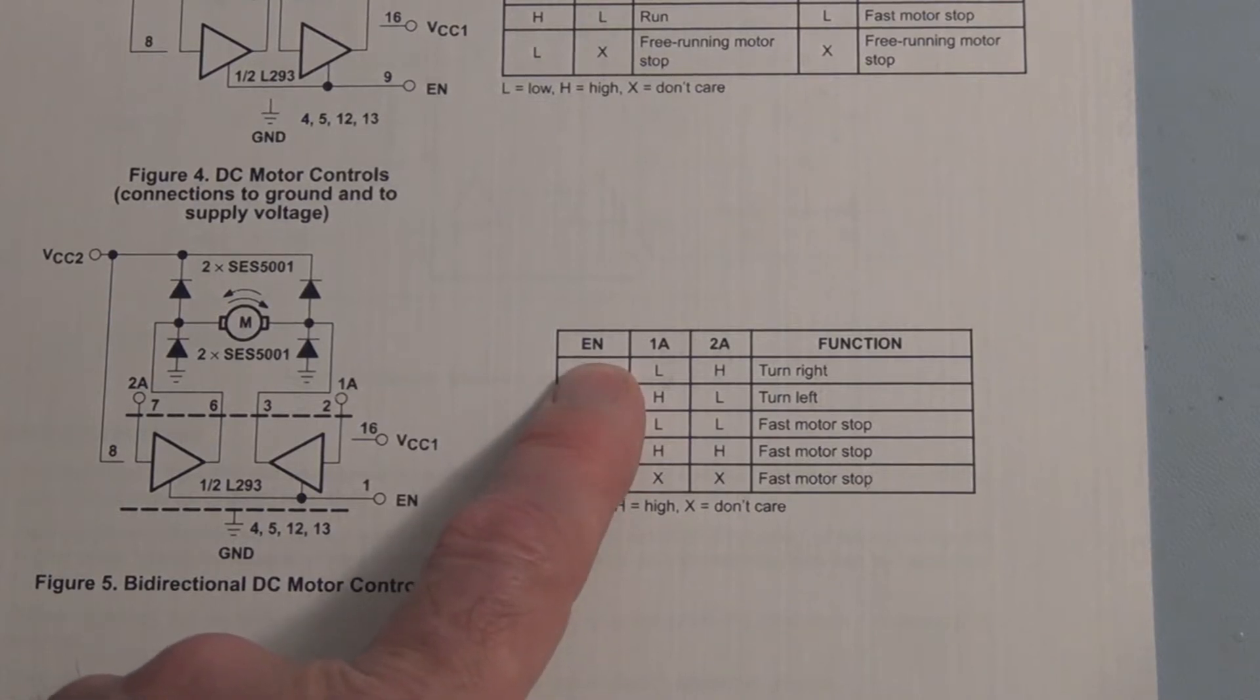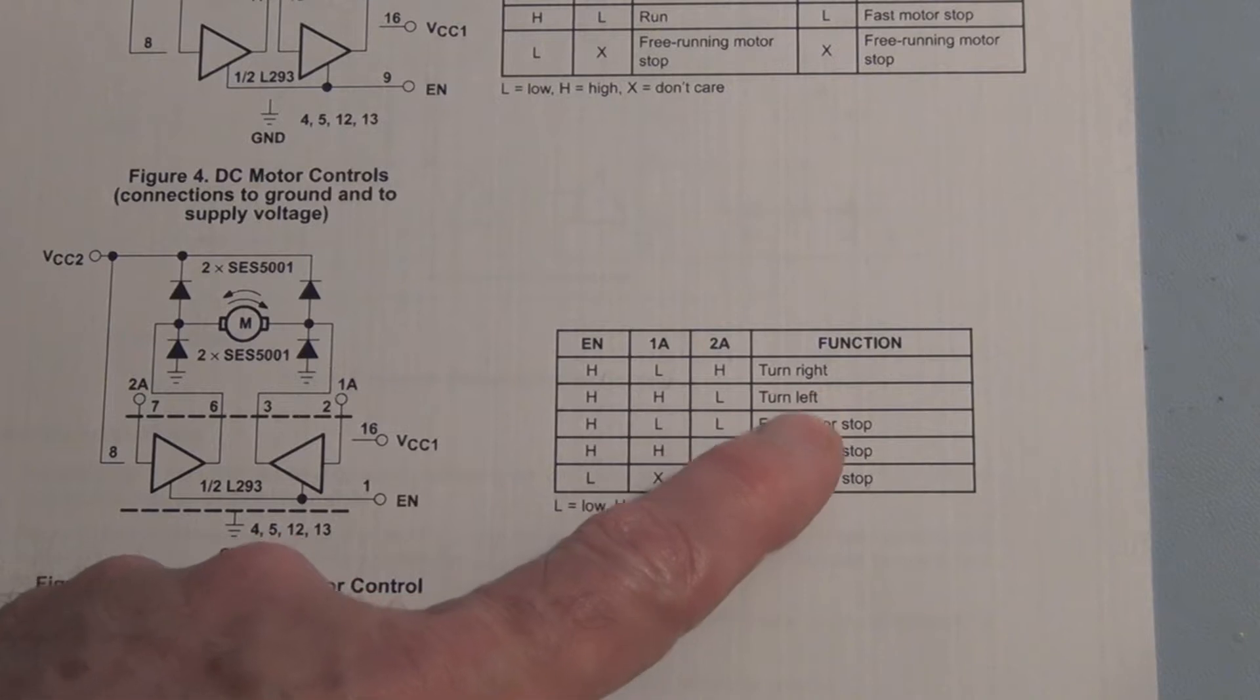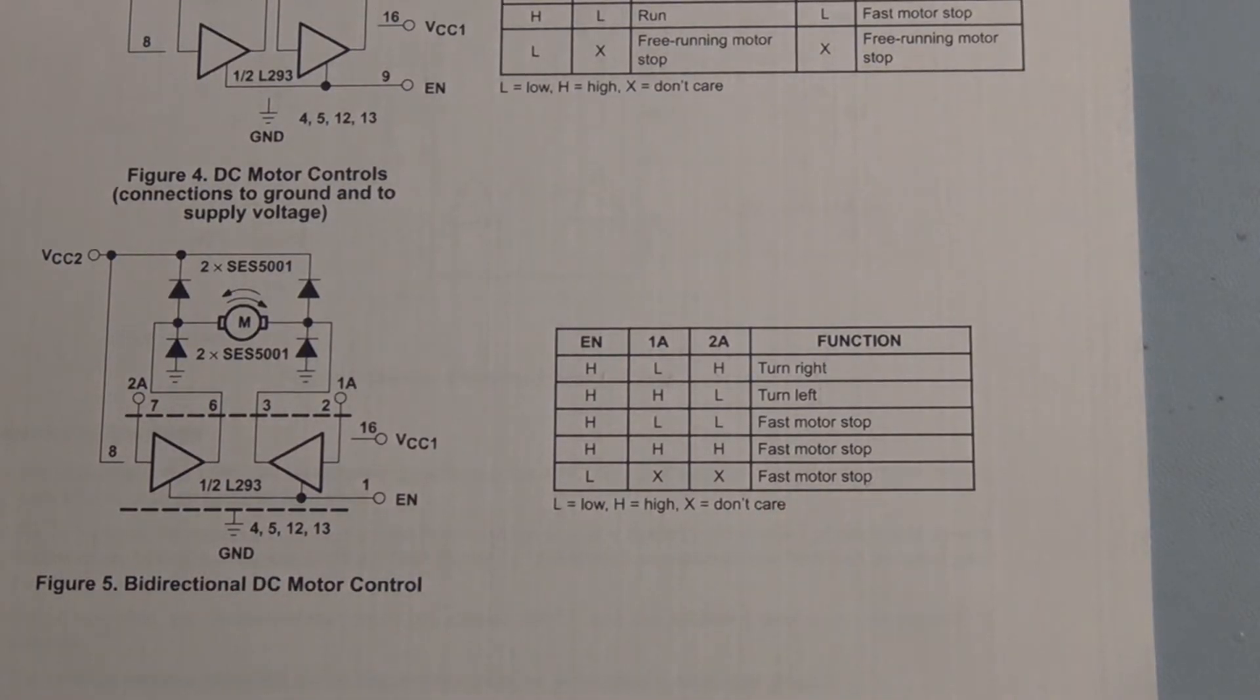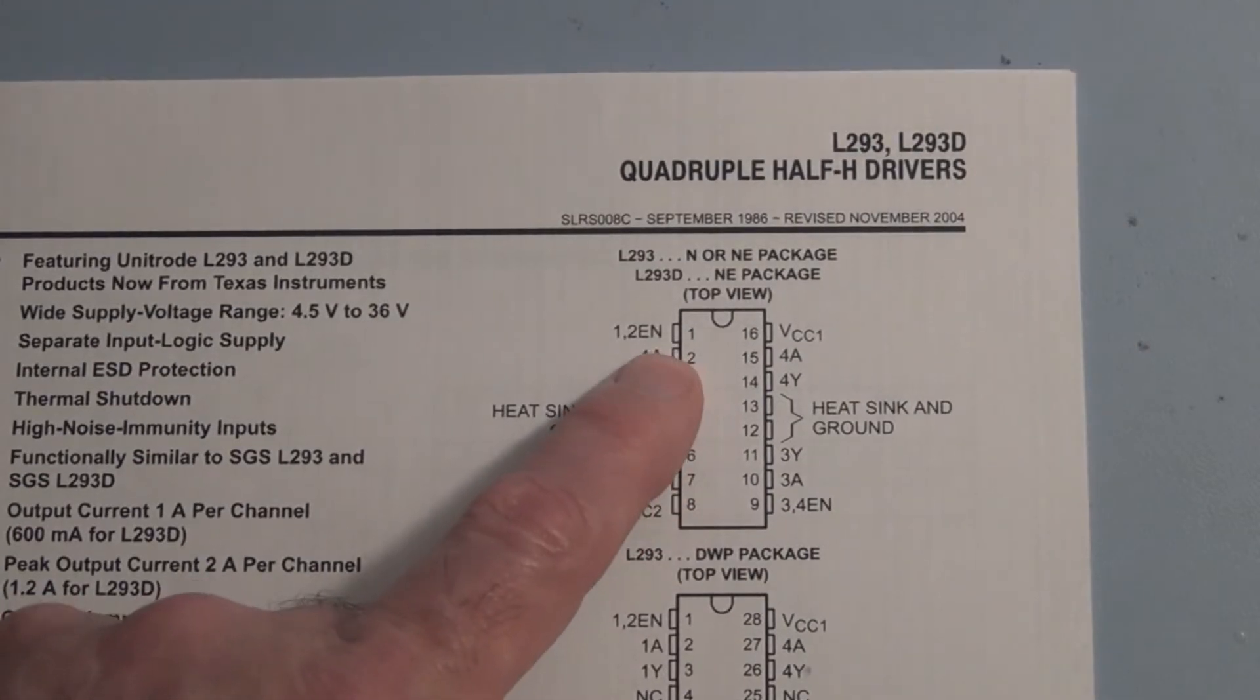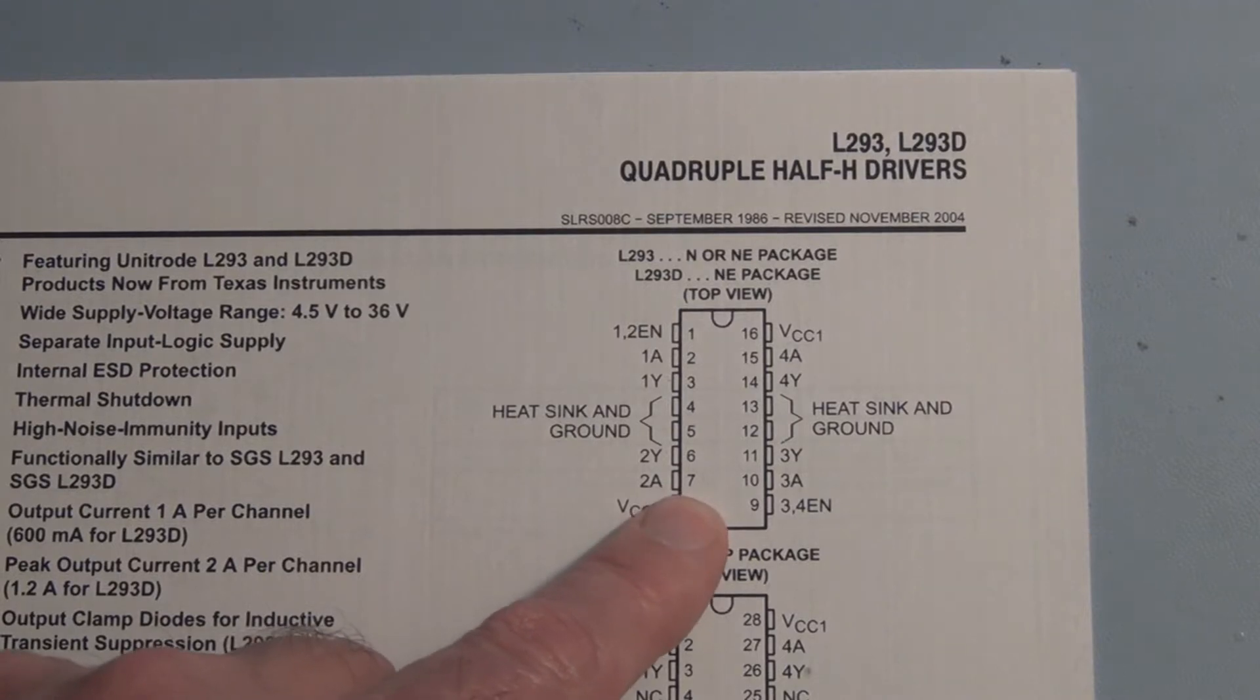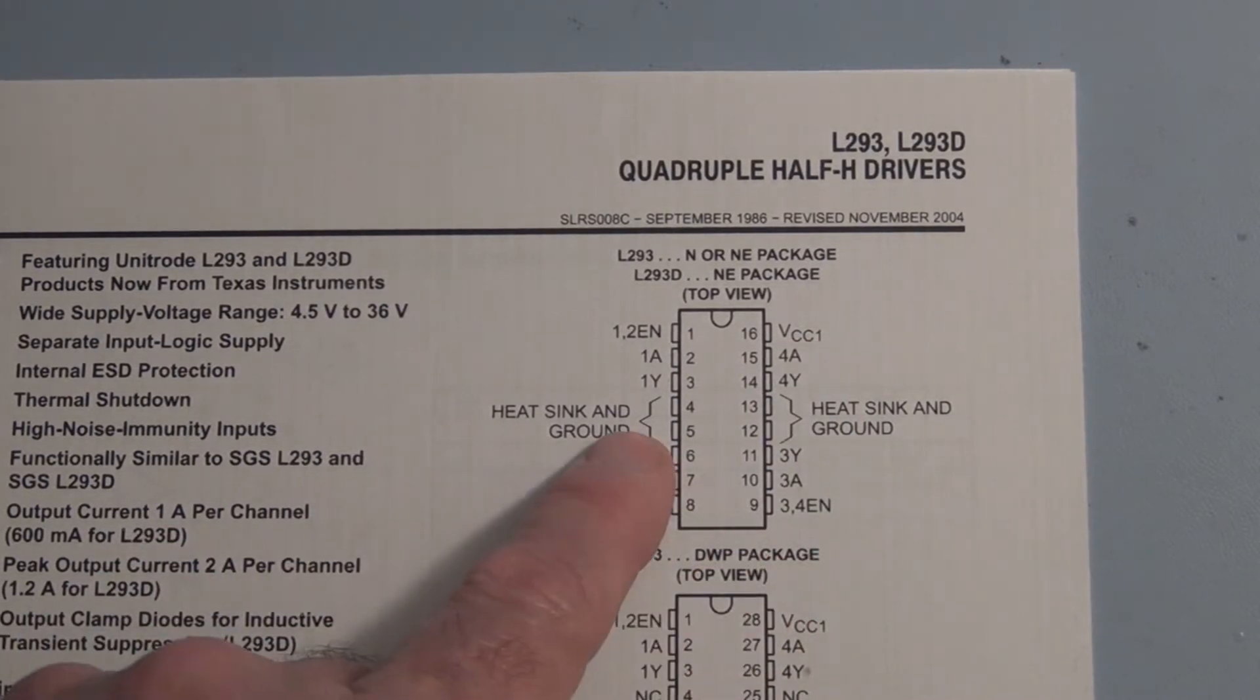And we have an enable pin. If it's high, if we have these logic levels on 1A and 2A, we can turn right, turn left, fast motor stop. And you can see here pin 1 is enabled. We're going to use pin 2, which is 1A, and also pin 7, which is 2A. And we've got VCC and the ground pins.